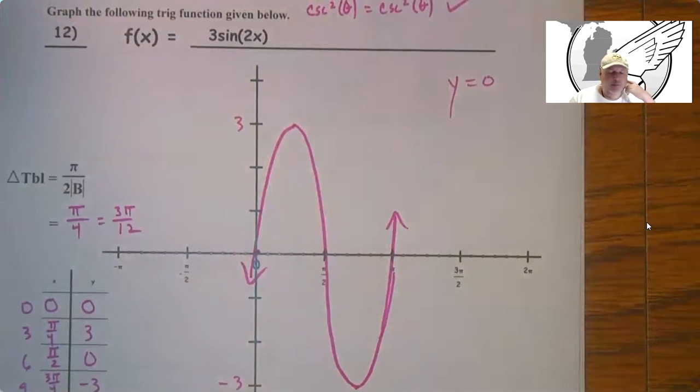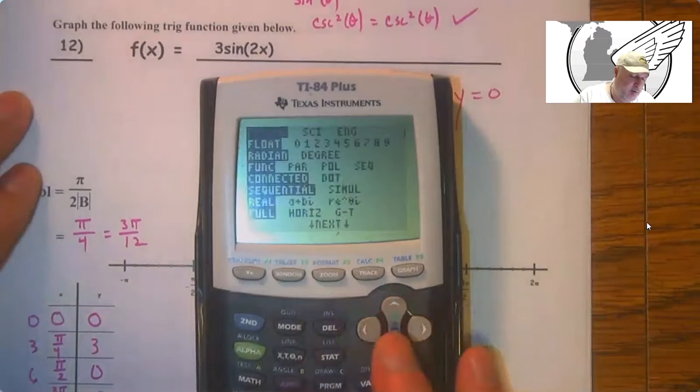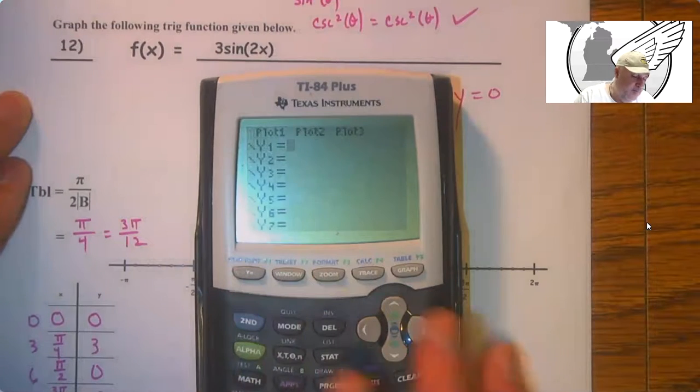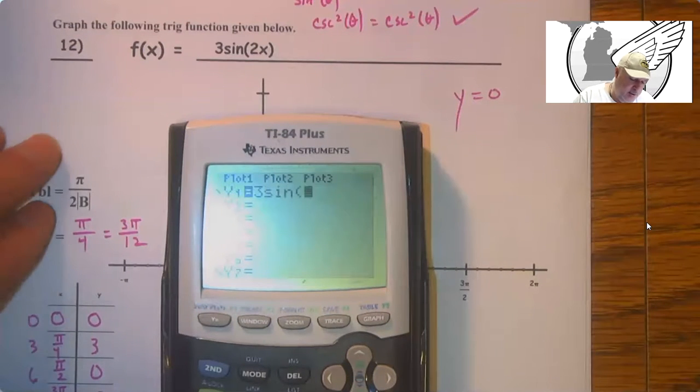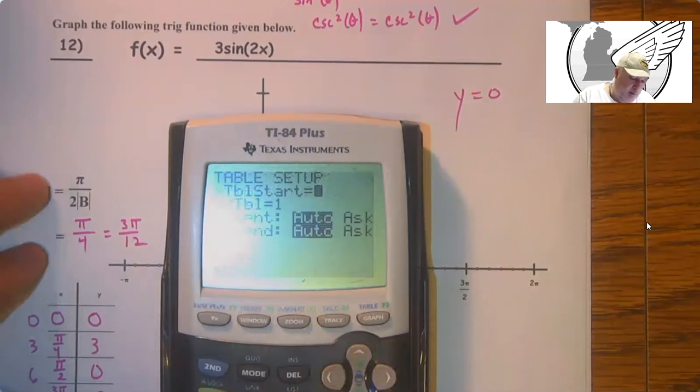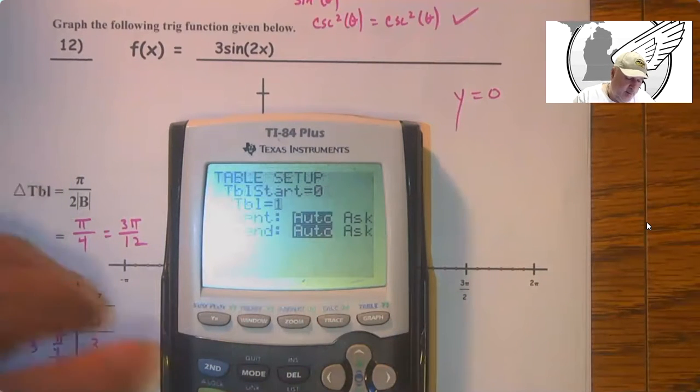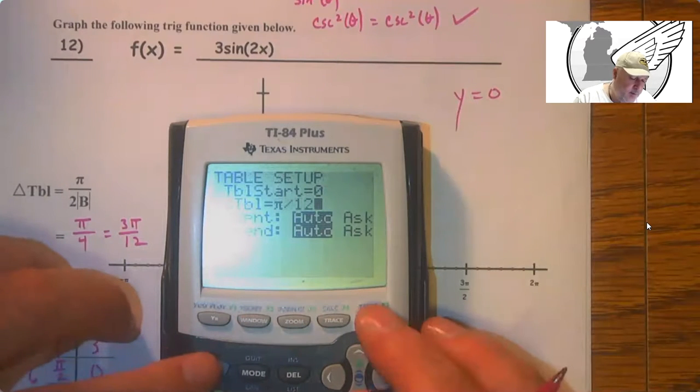So π over 4, you put it in for x. You could also, you know, might as well show this one time, I guess. Make sure you're in radian mode. And then just put it in. And you do have to get your delta table set correctly. So you got to go to your table. And 0 and the delta table is π over 12.